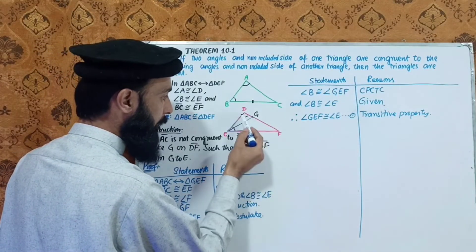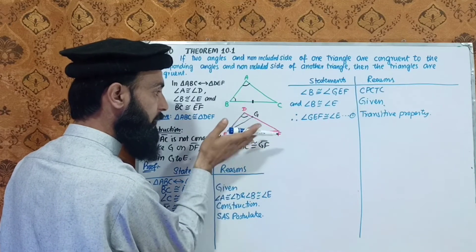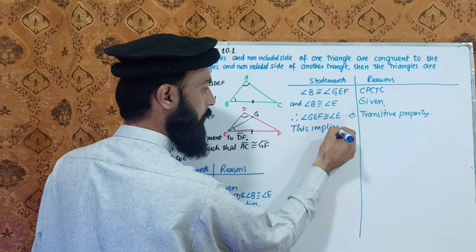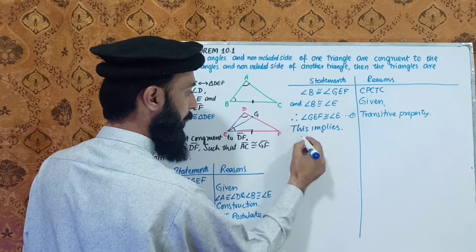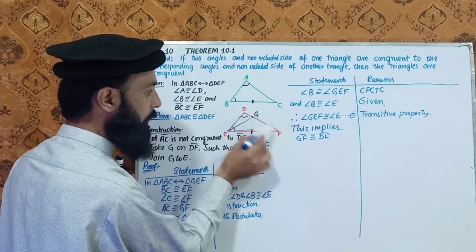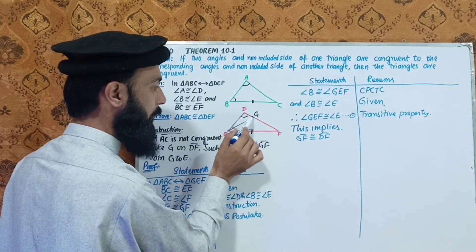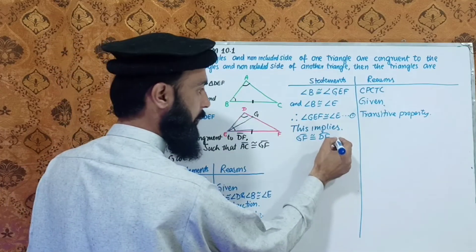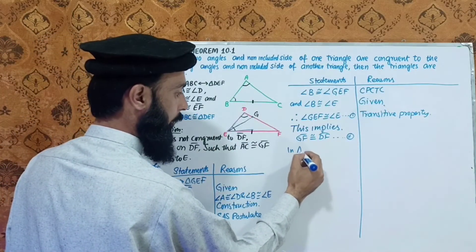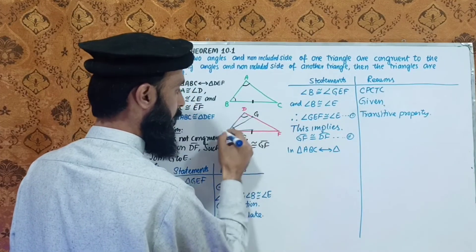This implies that G and D are the same point. Therefore, triangle ABC corresponds to triangle DEF.